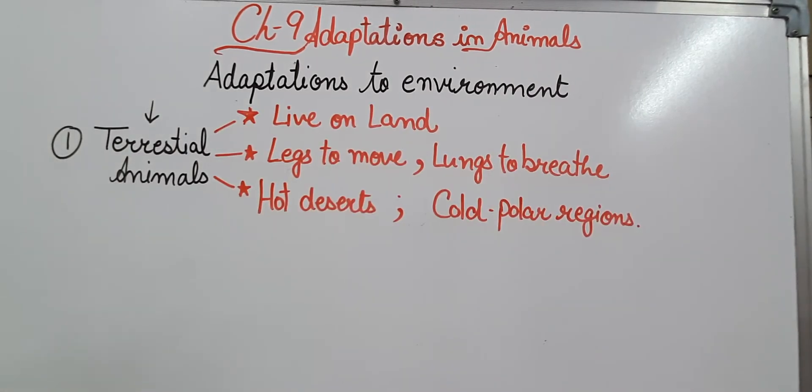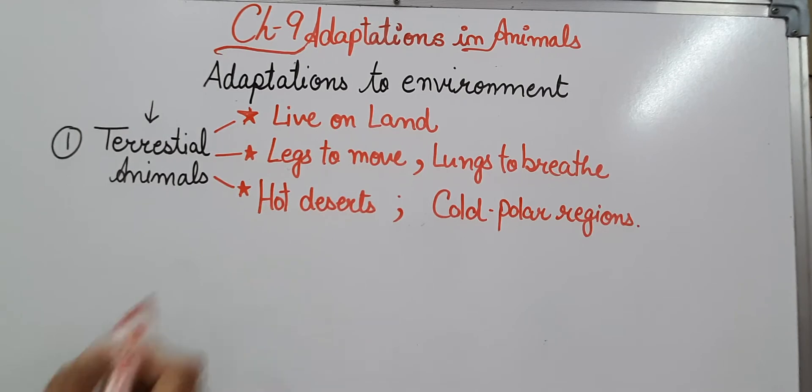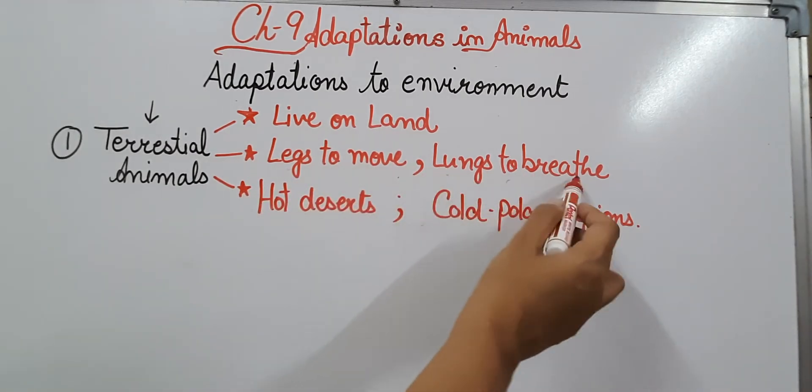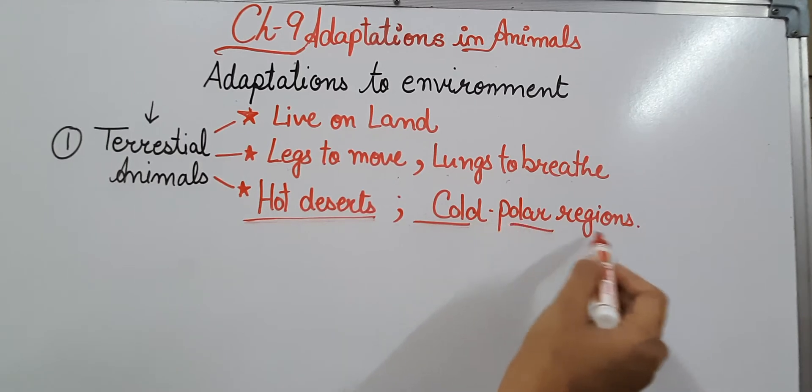The main features of terrestrial animals are that they generally live on land, they have legs to move and lungs to breathe the air. Now terrestrial animals can be found in hot deserts as well as in cold polar regions.